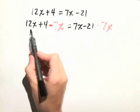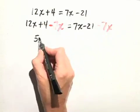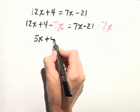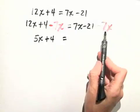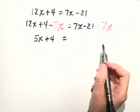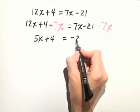On the left-hand side, 12x minus 7x is just 5x plus 4 equals, on the right-hand side, the 7x minus 7x add to 0, so we have negative 21.